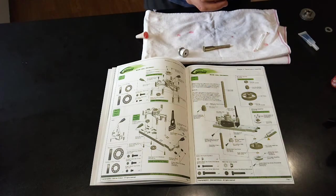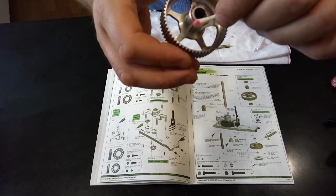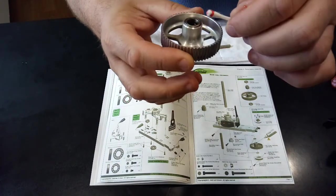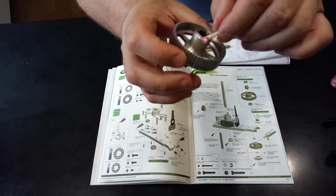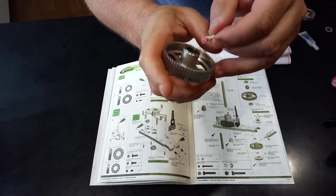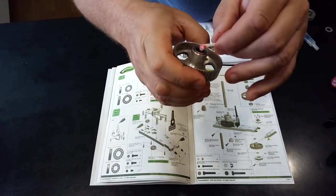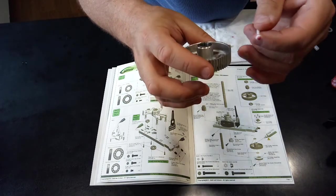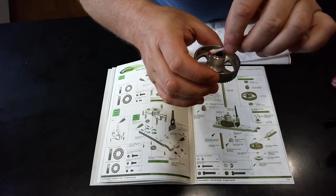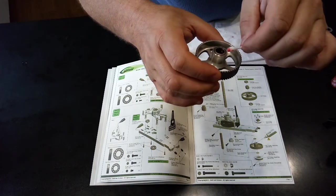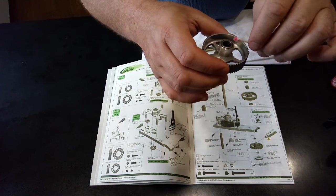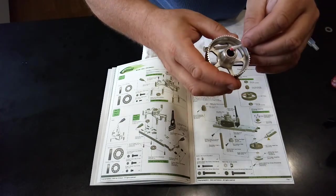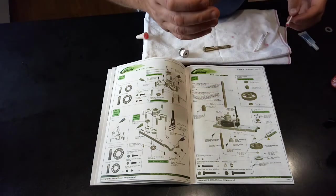Same again, cotton bud. Just keeping it away from the inside cage of that bearing. So try and wipe to the outside, rather than wiping across and in.